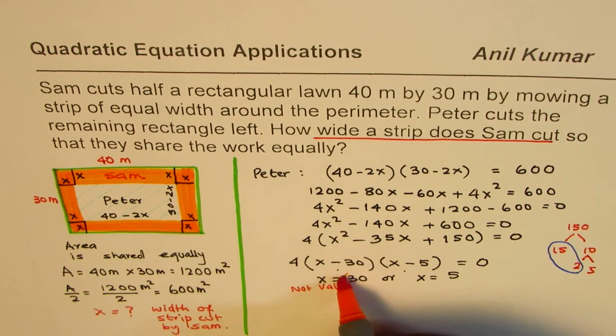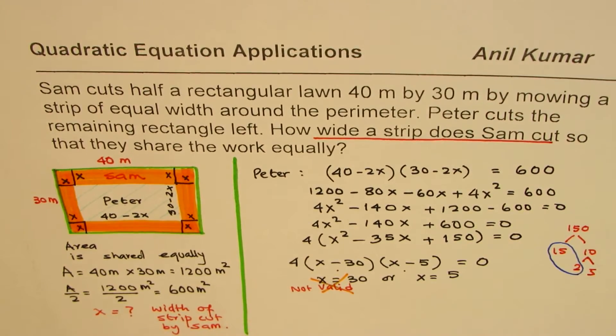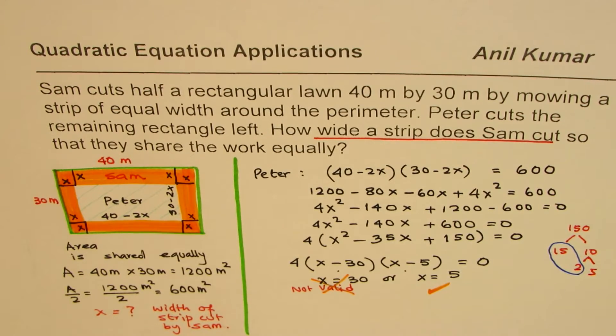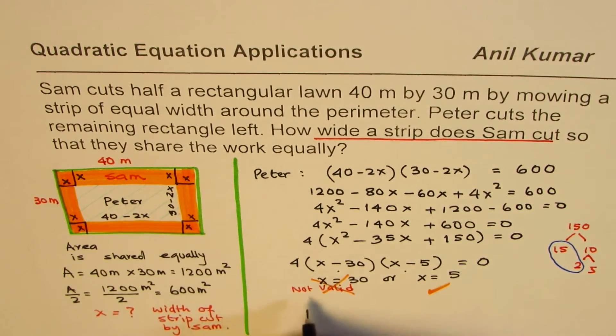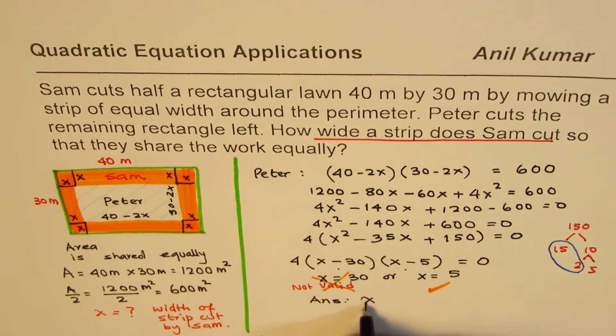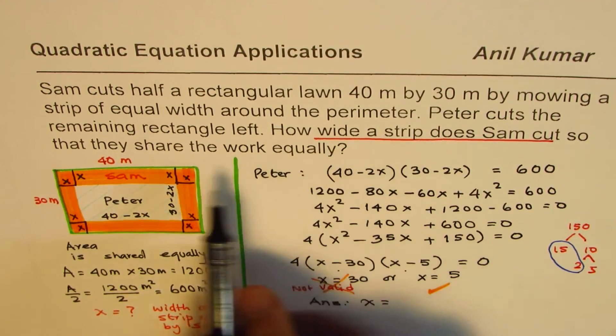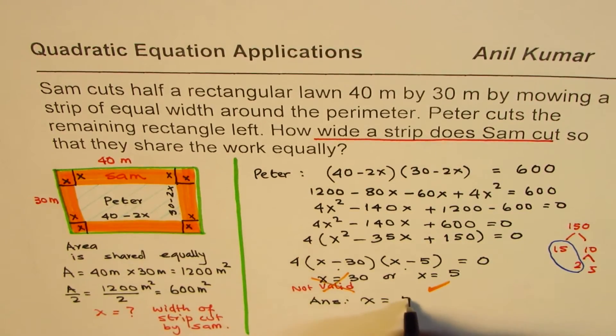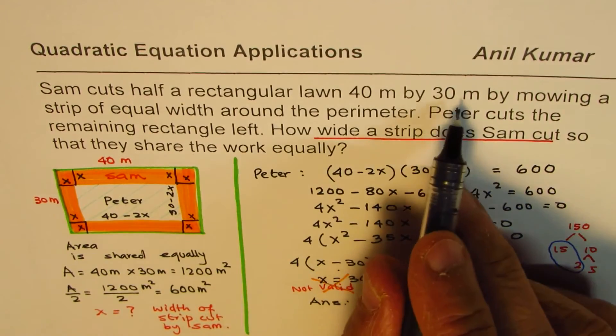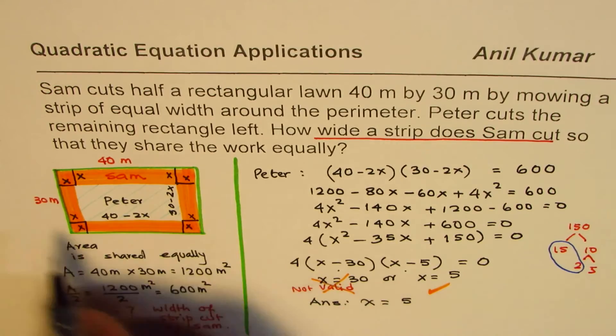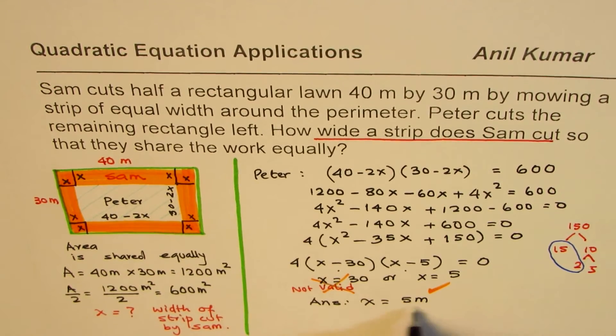But we accept this one. This is perfectly fine. So x value equals 5 is okay. The answer here is this strip is 5 meters wide.